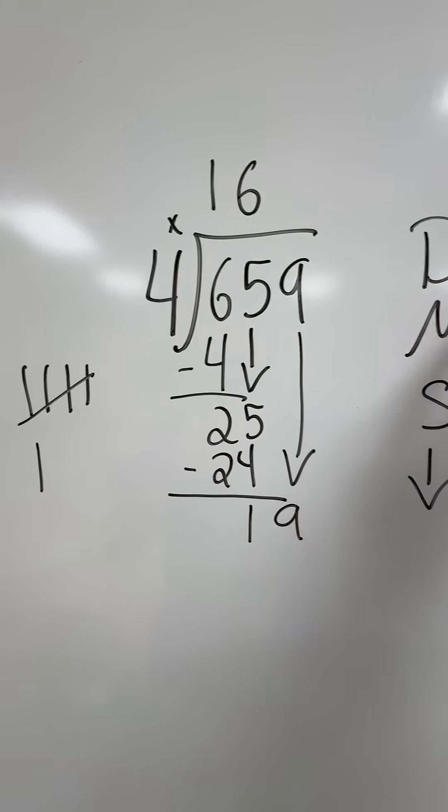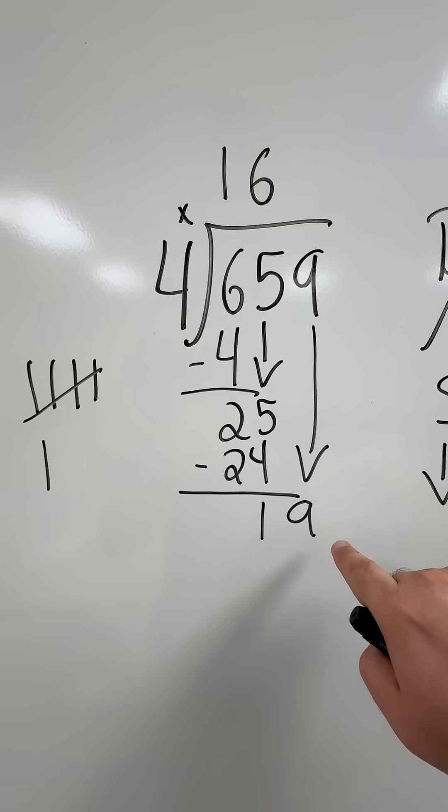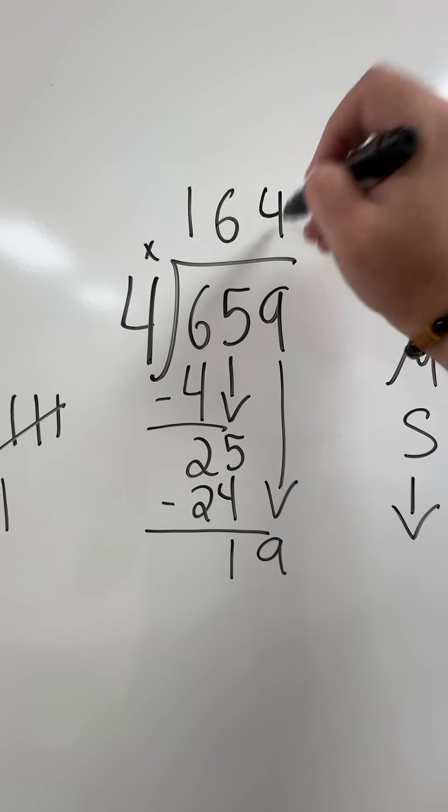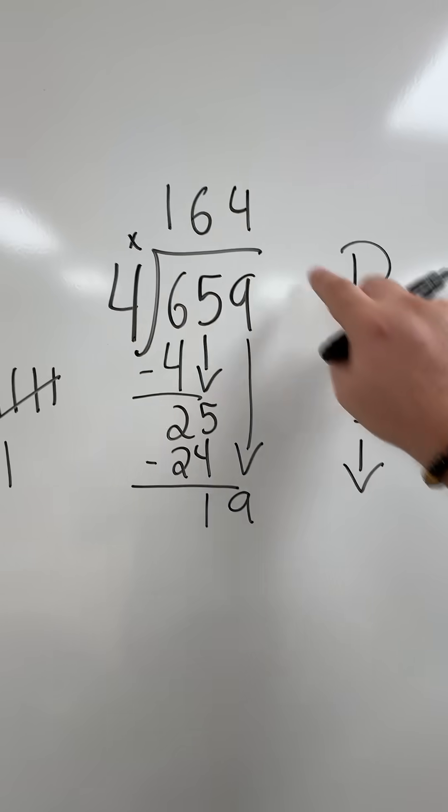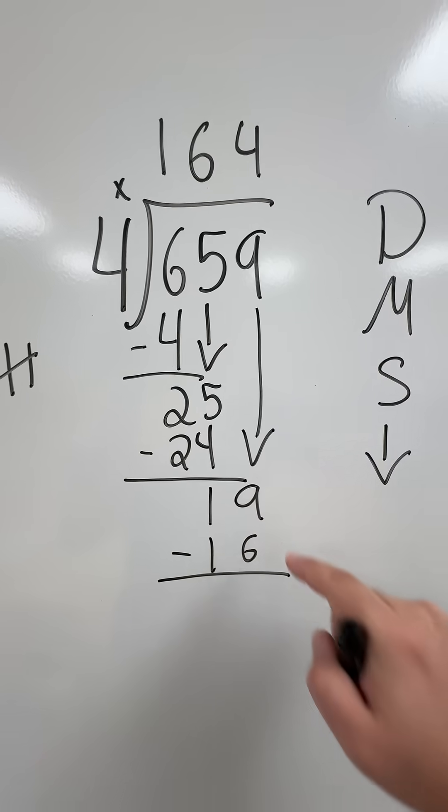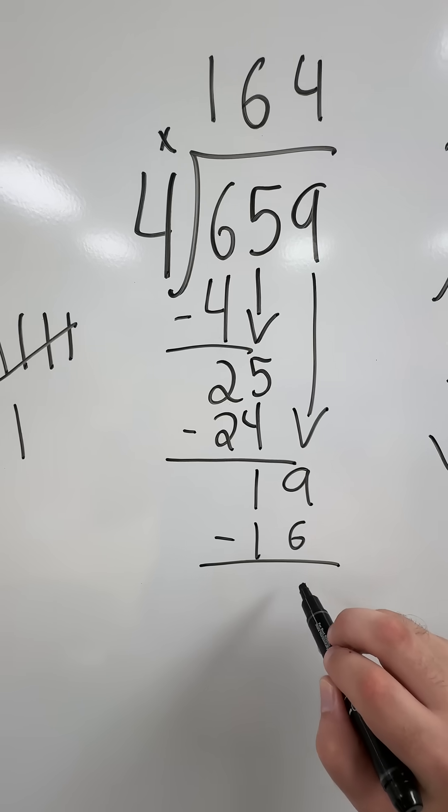How many times can 4 go equally into 19? That would be a total of 4 times. Next step, multiply. 4 times 4 equals 16. I subtract. 19 minus 16 is 3.